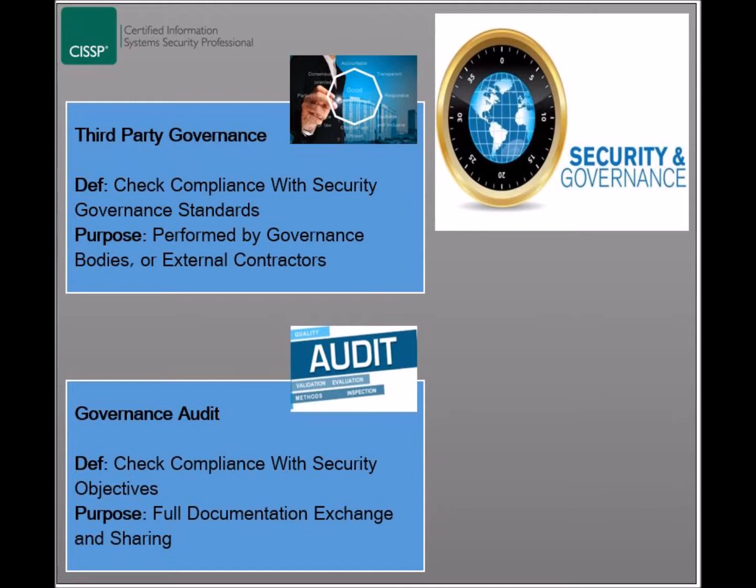Security governance audits to be performed should check the compliance of the organization with the stated security objectives and requirements, and should follow specific governance frameworks, such as COBIT. The audited organization and the governing body should fully share and exchange relevant documentation.